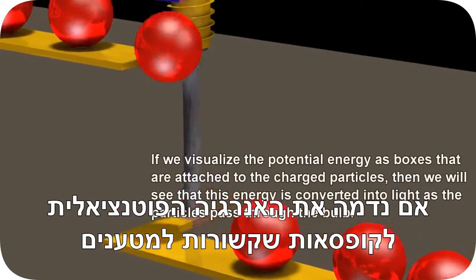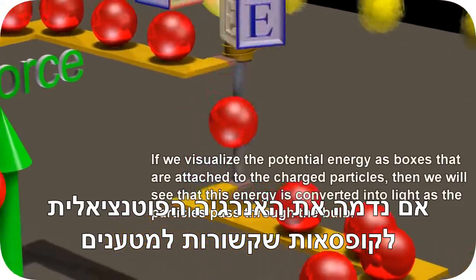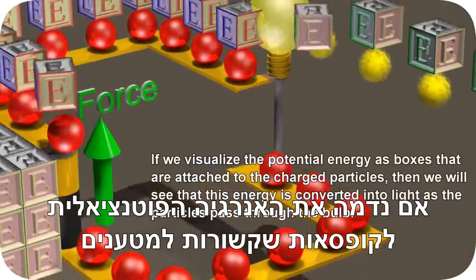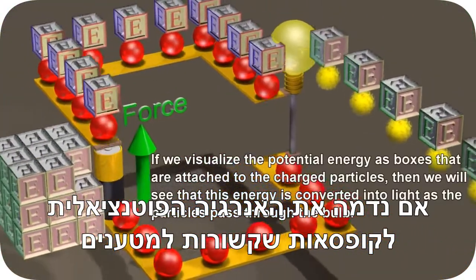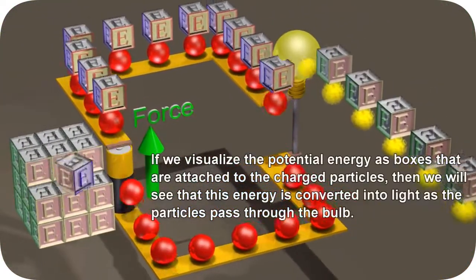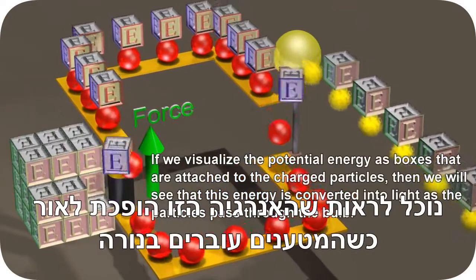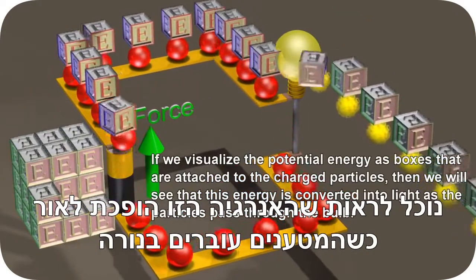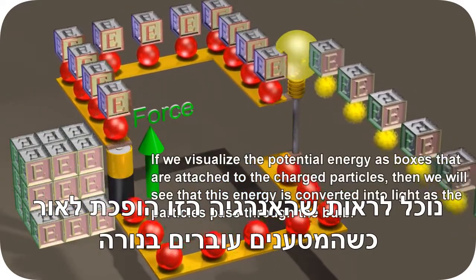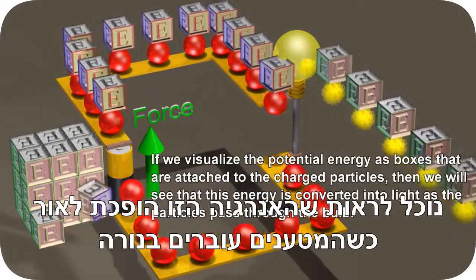If we visualize the potential energy as boxes that are attached to the charged particles, then we will see that this energy is converted into light as the particles pass through the bulb.